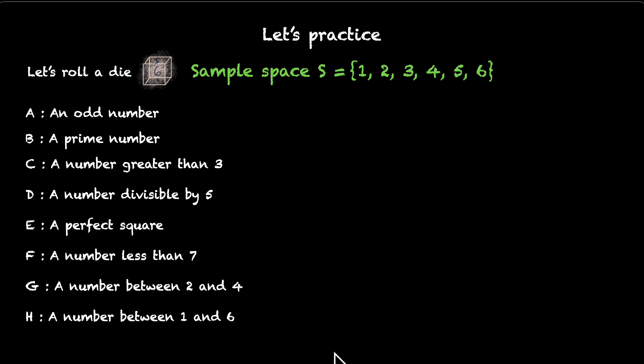Okay. So, let's do this together. For the event A, we need an odd number. There are three odd numbers: 1, 3, and 5. So, the event A is 1, 3, and 5. So, what we need is everything else. We need all the remaining numbers from the sample space S, which is actually the list of even numbers. So, that's A dash. That's 2, 4, and 6.